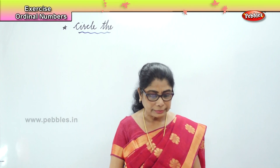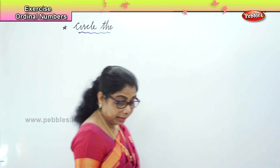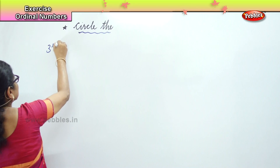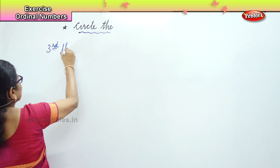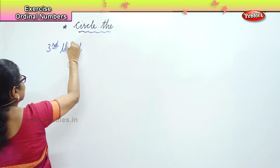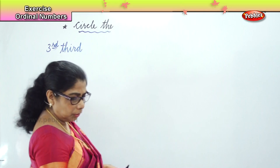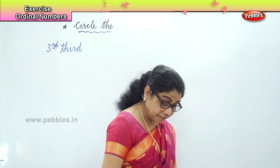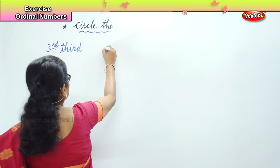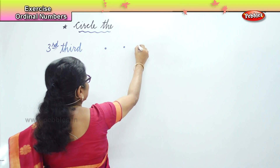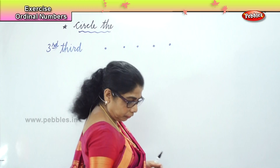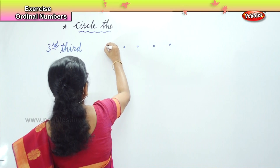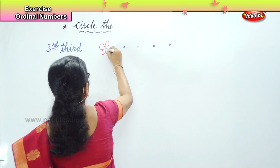Now I will write here — let's say, third. Third — third what? I am going to draw things for you. Let's say the third flower. Alright? You are going to circle the third flower.